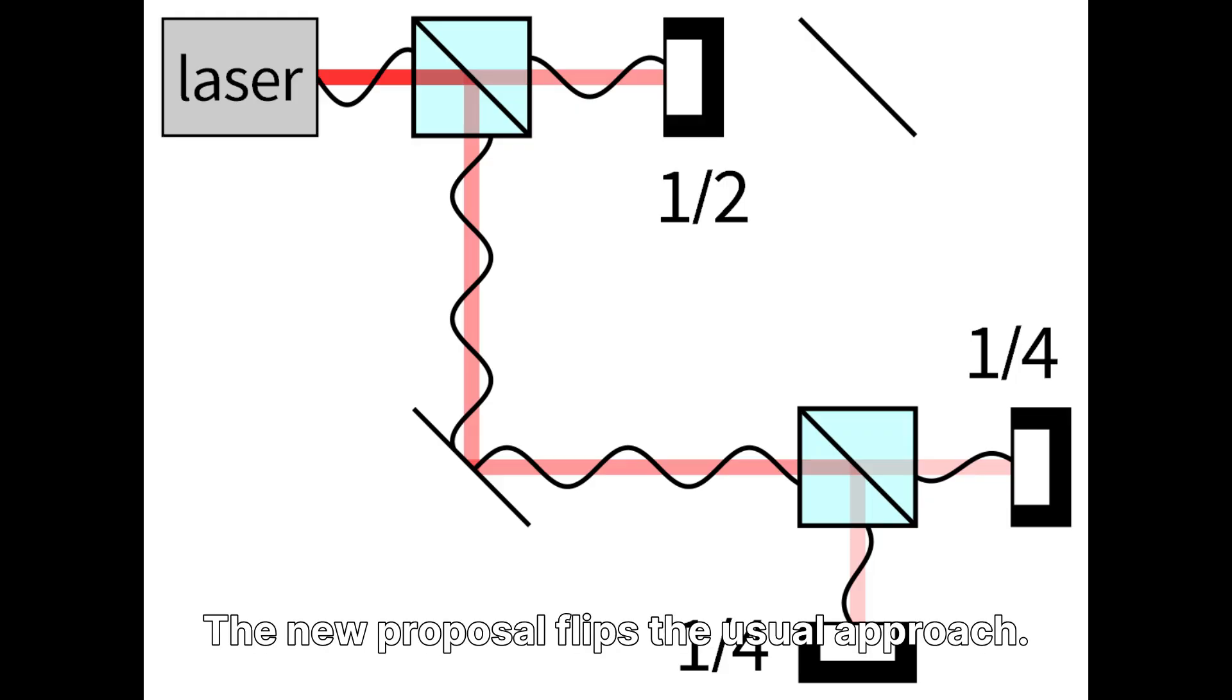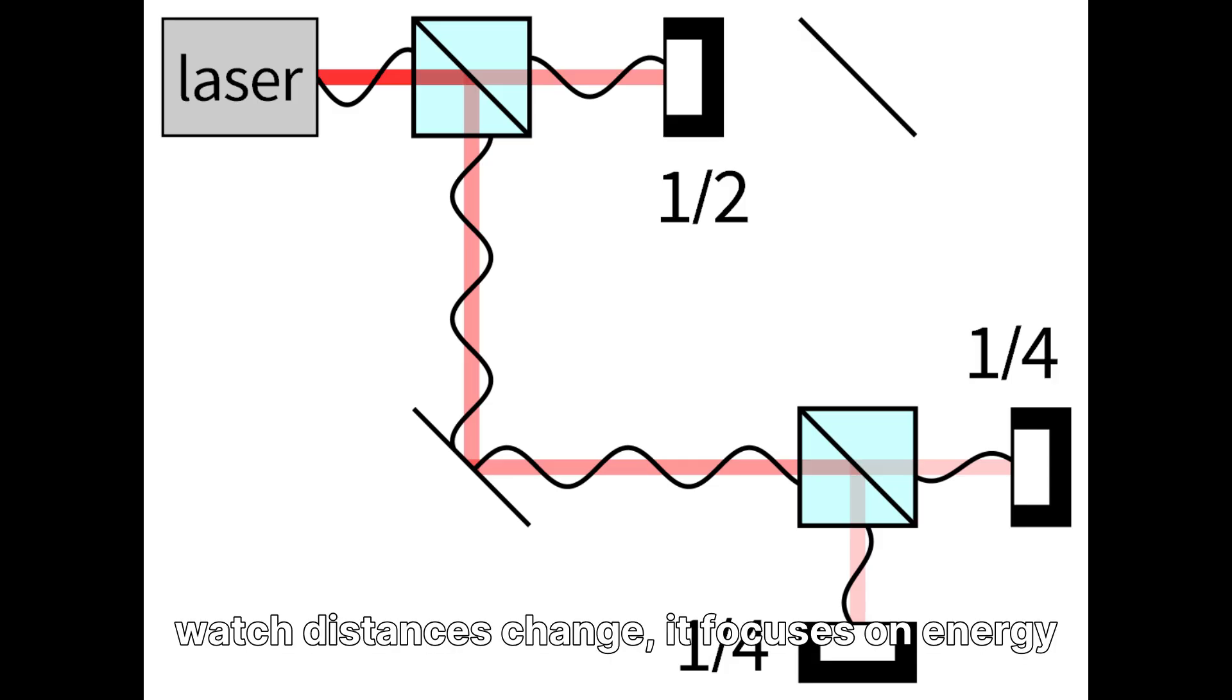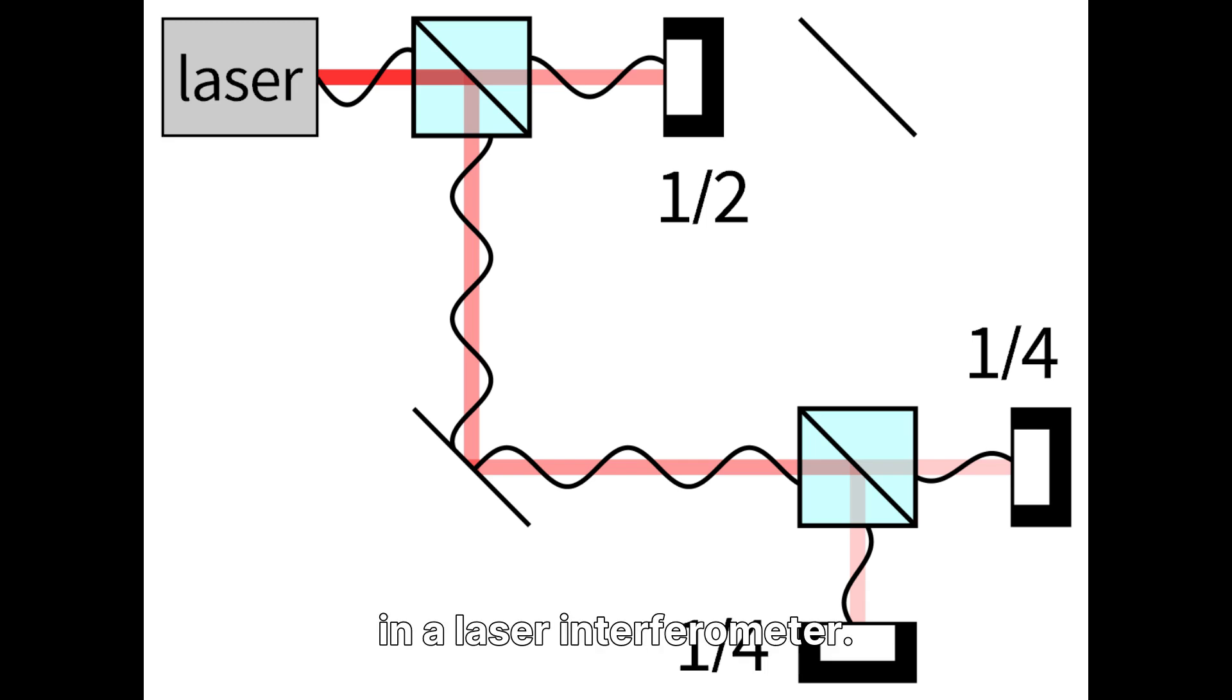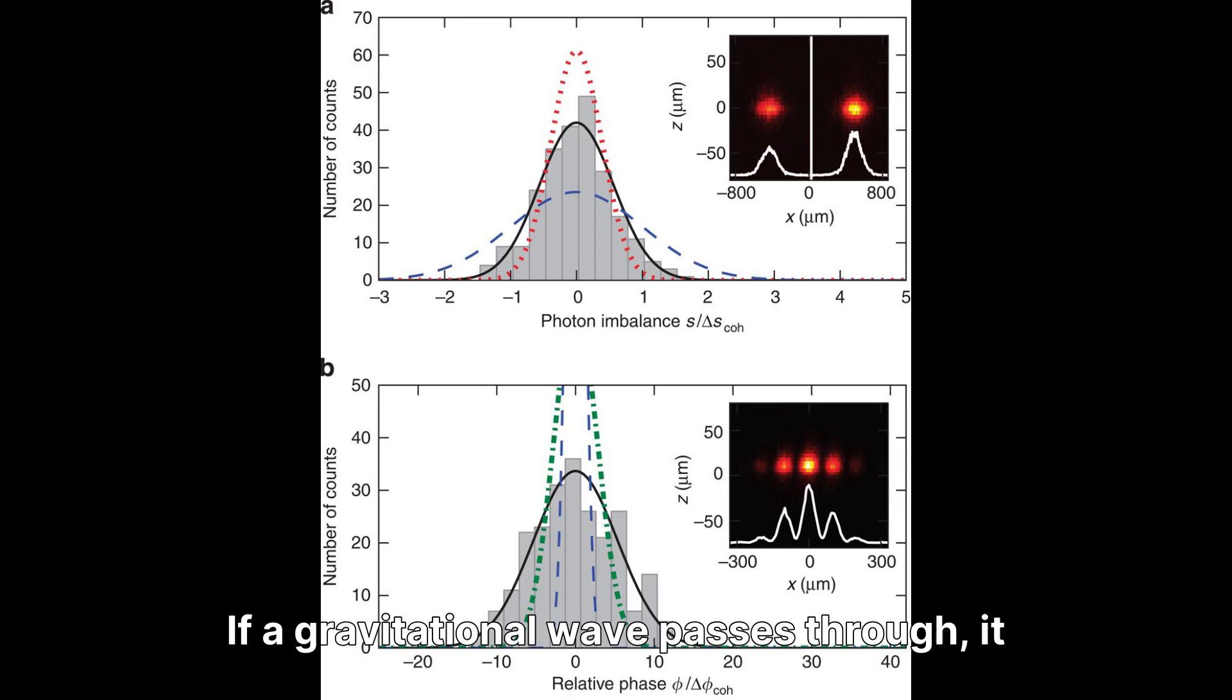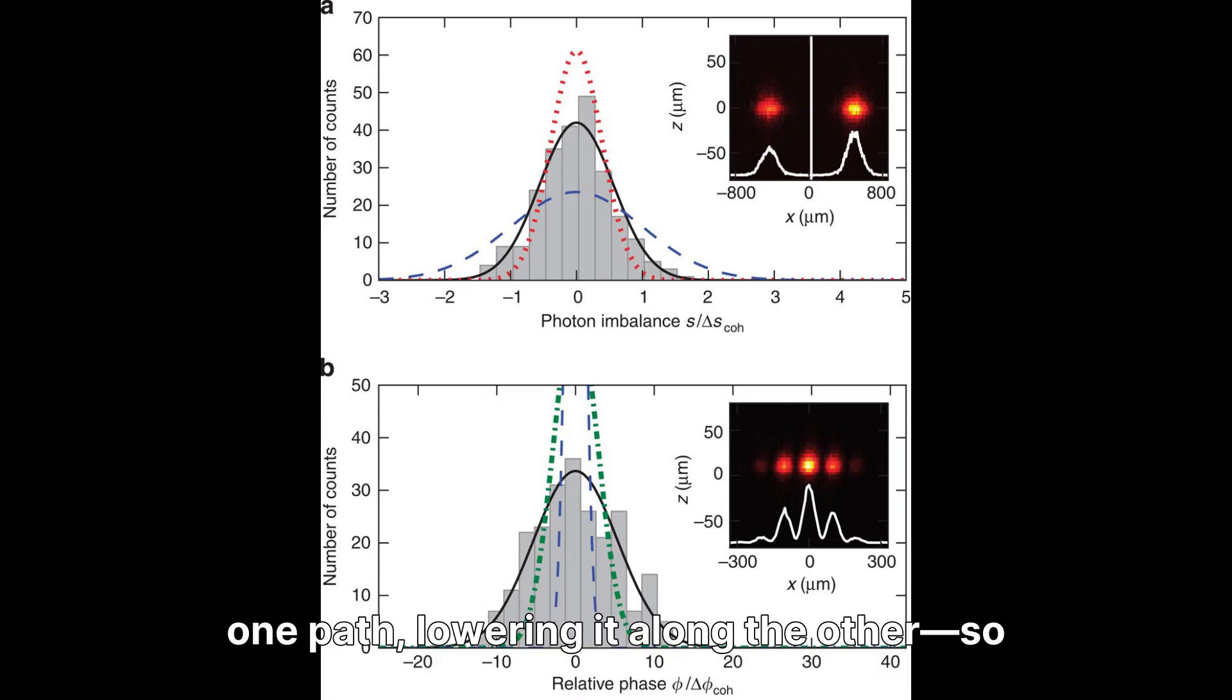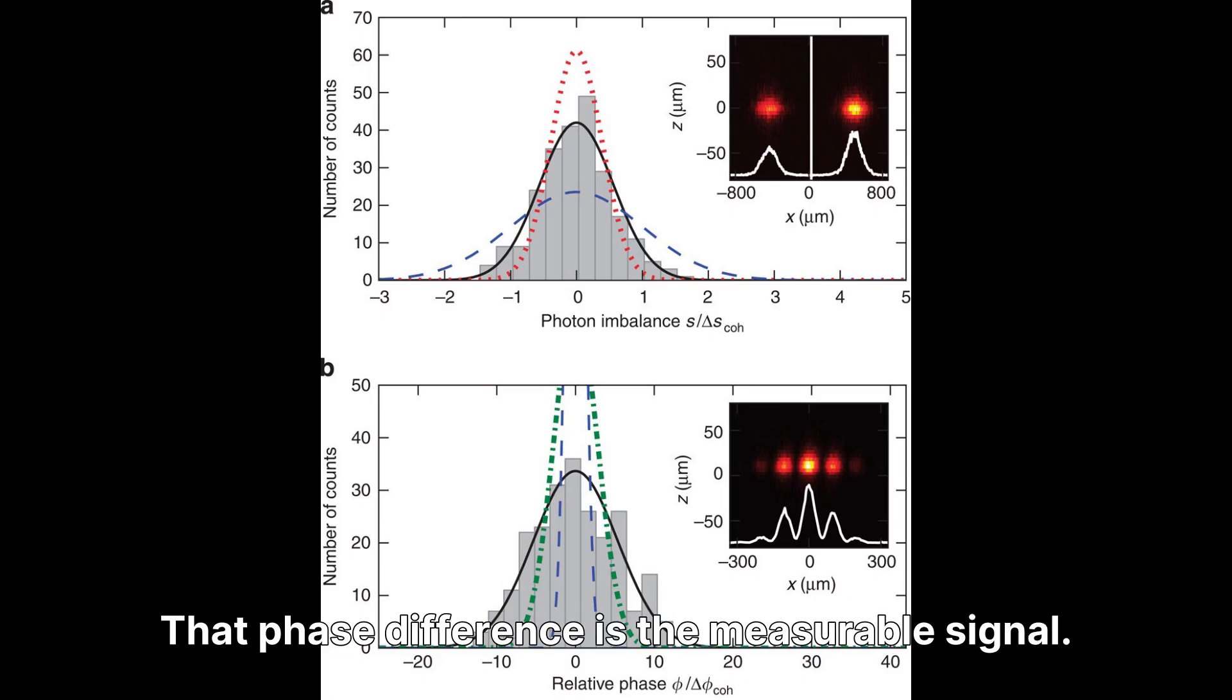The new proposal flips the usual approach. Instead of trying to move mirrors and watch distances change, it focuses on energy transfer between a gravitational wave and photons in a laser interferometer. If a gravitational wave passes through, it can modulate the photon's frequency, raising it along one path, lowering it along the other, so when the beams recombine, you get a non-zero phase difference.